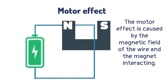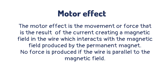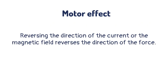The motor effect is caused by the magnetic field of the wire and the magnet interacting. It is the movement or force that results from the current creating a magnetic field in the wire, which interacts with the magnetic field produced by the permanent magnet. No force is produced if the wire is parallel to the magnetic field. Reversing the direction of the current or the magnetic field reverses the direction of the force.